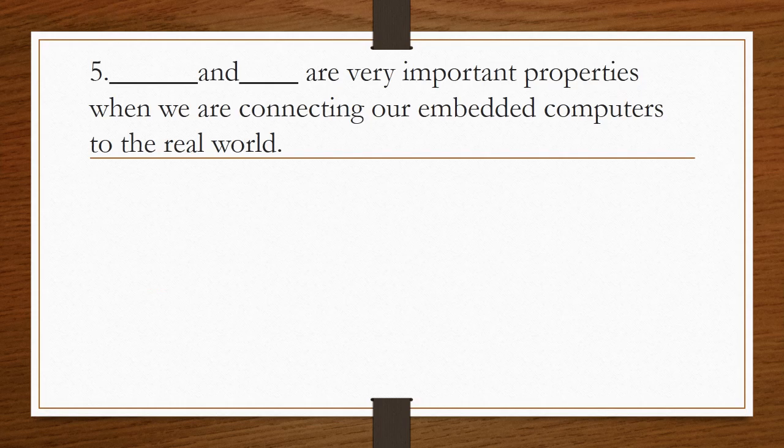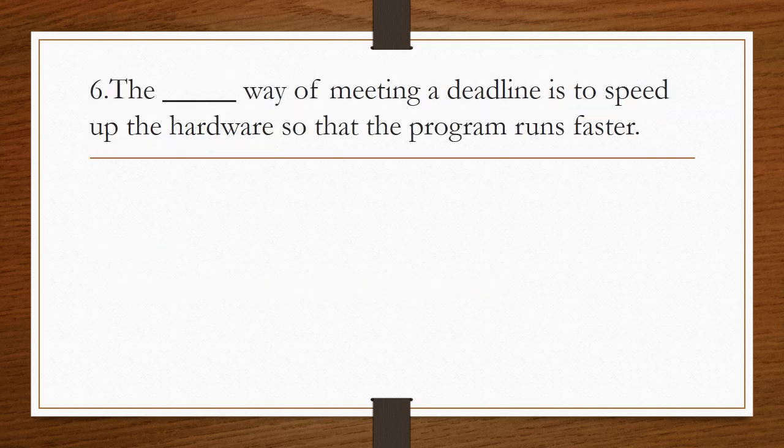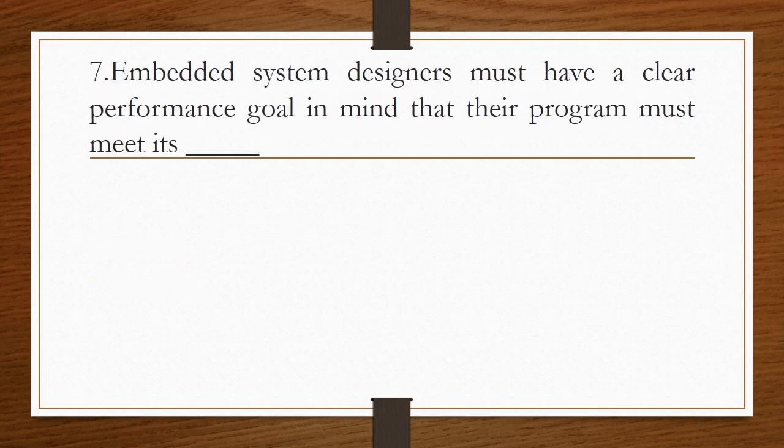Blank and blank are very important properties when connecting embedded computers to the real world. The important properties are software performance and energy consumption. The blank way of meeting a deadline is to speed up the hardware so the program runs faster. Answer is brute force. Embedded system designers must have a clear performance goal in mind that their program must meet its deadline.